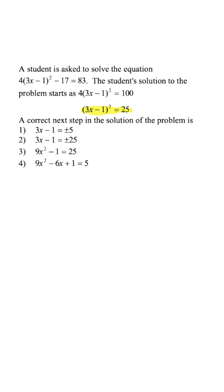the next best step is to get rid of the exponent, and for us to do that, we have to take the square root of both sides. So that means answer choice 3 and 4 are incorrect.